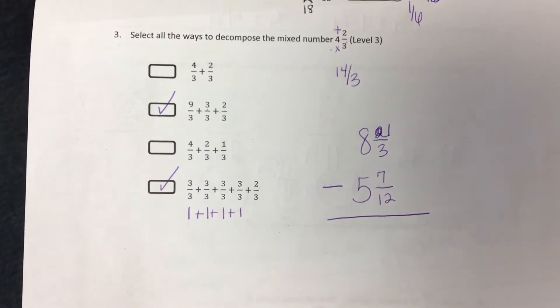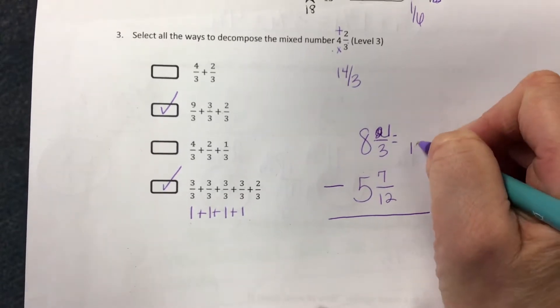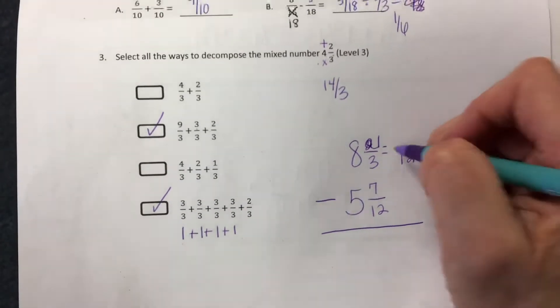Let's look at this one together. The first thing that I need to do is find a common denominator. One third is equal to how many twelfths? Four twelfths.